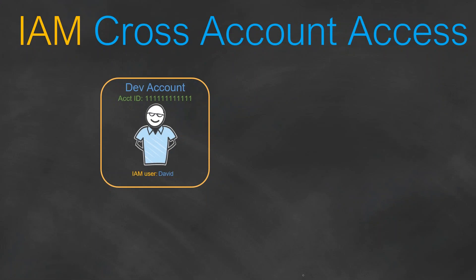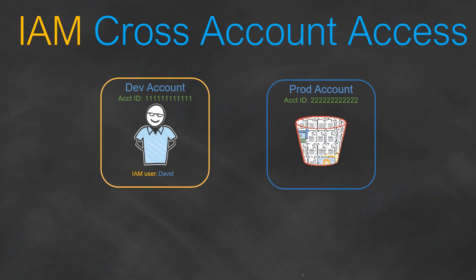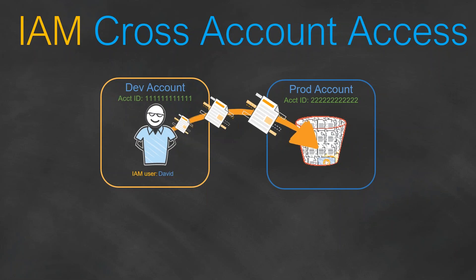And David, being a developer, sometimes he needs access to the production account where an S3 bucket will have logs from his production app, or he will have to copy some files over to production — pushing log files or new project-related files from his dev account all the way to production. So how can David accomplish this without it being too much of a hassle, switching from dev account to prod account and likewise pushing or retrieving information?